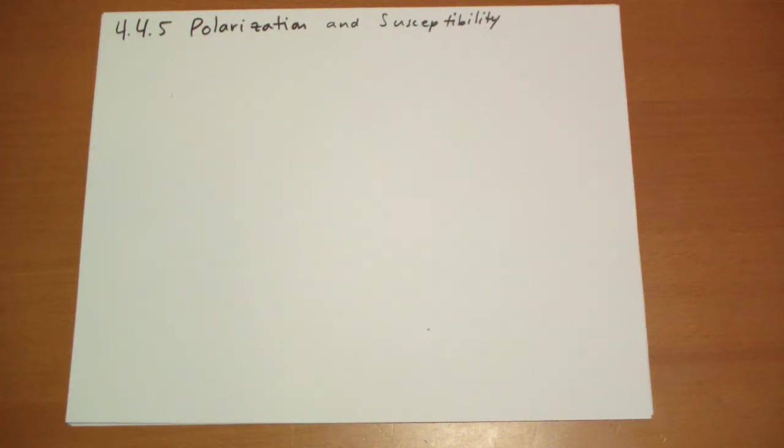Hi, this is Jonathan Gardner. This is the last section of chapter 4 before we get onto magnetostatics. This is section 4.4.5, polarization and susceptibility, from Griffith's introduction to electrodynamics, second edition.